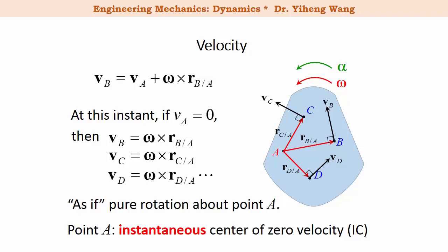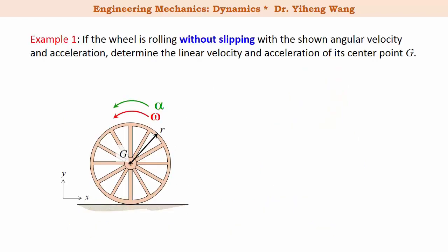Sometimes the instantaneous center of zero velocity can be determined simply through observation. For example, in this problem, if the wheel is rolling without slipping and it has the given angular velocity omega and angular acceleration alpha, we need to determine the linear velocity and linear acceleration of its center point G. Since this wheel is rolling without slipping, where it is in contact with the ground it should have the same velocity as the ground, which is zero. Therefore this contacting point is our instantaneous center of zero velocity.